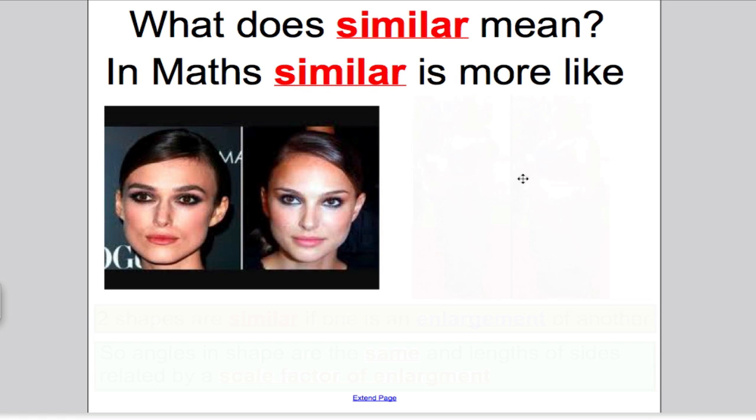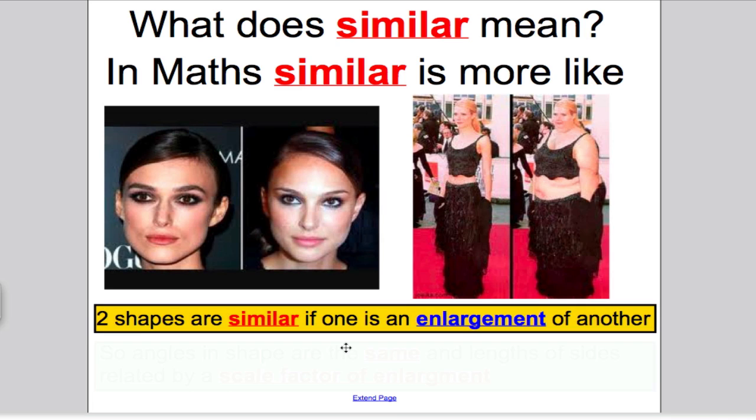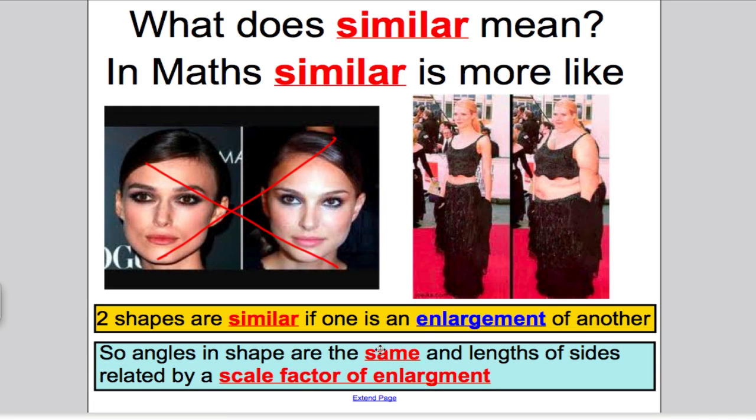In math, similar is not necessarily look the same. Similar is more like this picture here of Gwyneth Paltrow, how she normally is, and then when she took on the role in Shallow Hal, she put on a suit to make her look bigger. So similar is more like that in math. What I mean by that is, similar is when one shape is an enlargement of the other. Two shapes are similar if one is an enlargement.